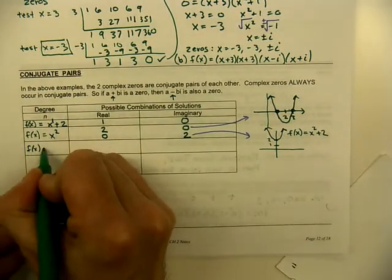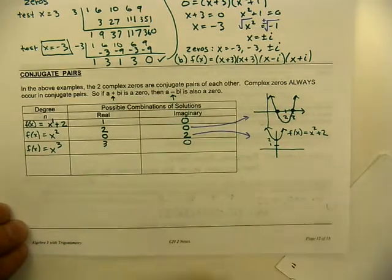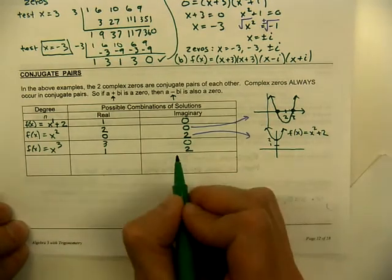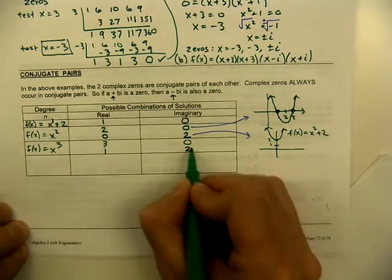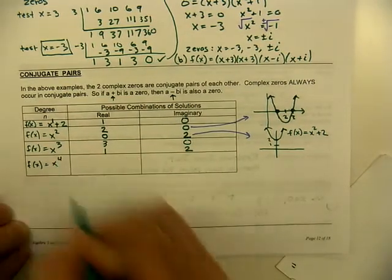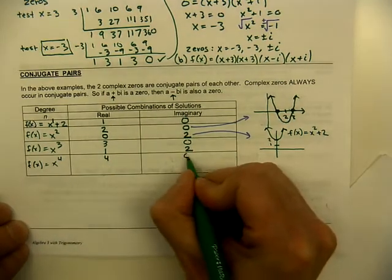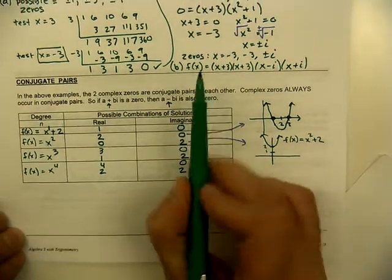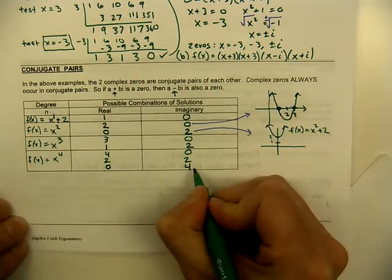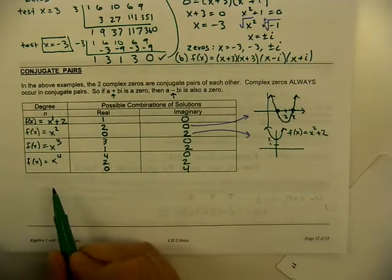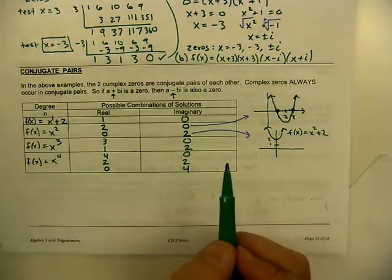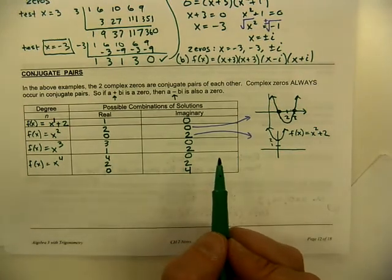For a third degree polynomial, the only possible combinations are: three reals and no imaginaries, or one real and two imaginaries. You cannot have two reals and one imaginary because imaginaries always come in pairs. For a fourth degree polynomial, you could have four reals and no imaginaries, two reals and two imaginaries — as in example three — or no reals and four imaginaries (two pairs). We can use this concept to work with pairs of complex numbers in specific problem types, which we'll see in examples four and five.